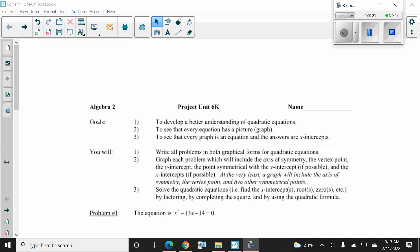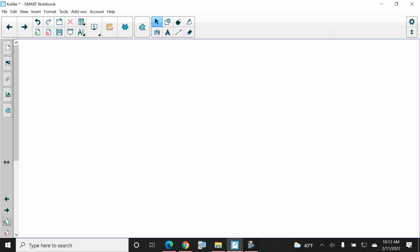You can follow the directions here. Write all the problems in both graphical forms. So really what that means is I want to see six things. Six things go as follows when it's all done. It doesn't matter the order.